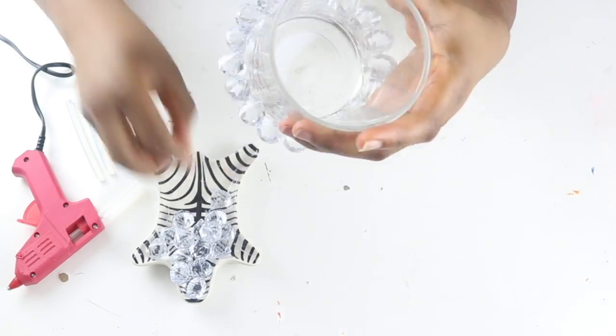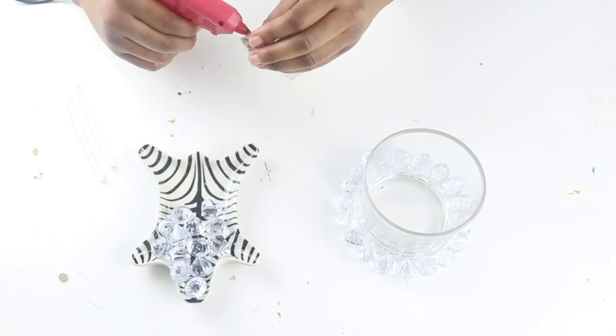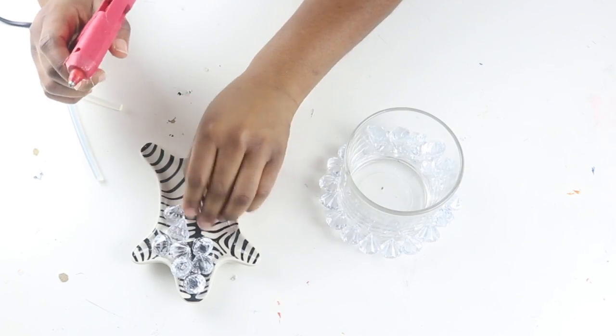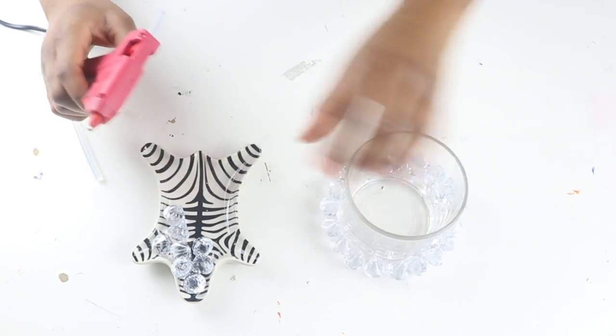So once the first row of diamonds has been completed, now in the next row the pointer part of the diamond will be pointing downwards. This helps give that nice effect when the candle's in the jar.